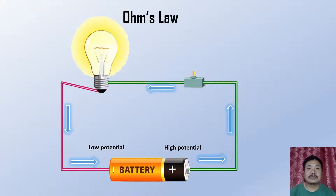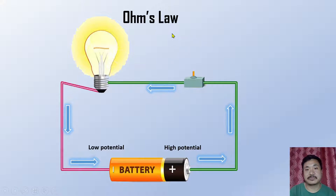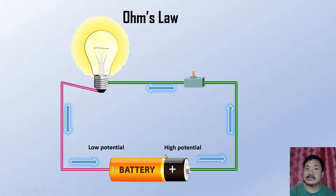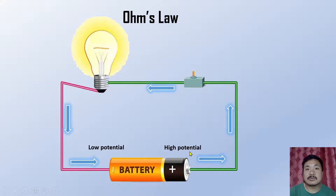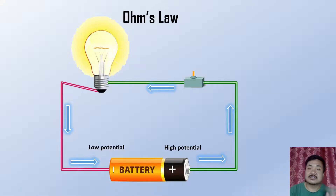In Ohm's law, the positive terminal of the battery is at higher potential and the negative terminal is at lower potential. So current flows from the positive terminal through the conductor. This is how the current flows — Ohm's law helps us understand this.